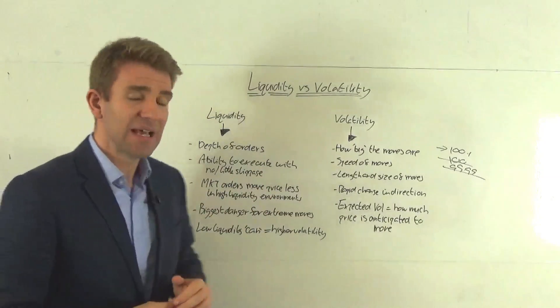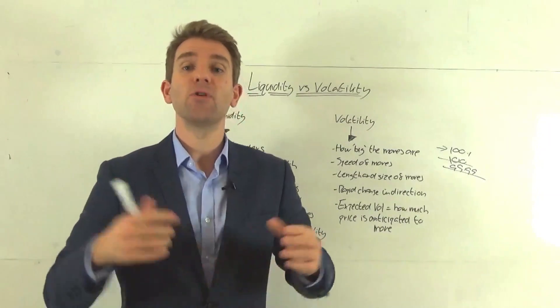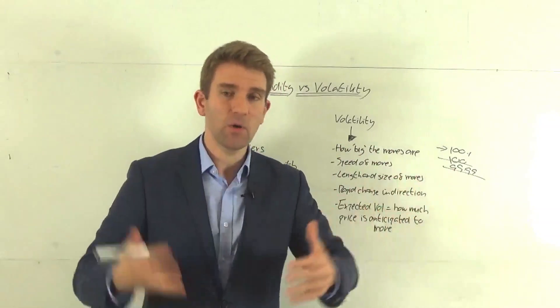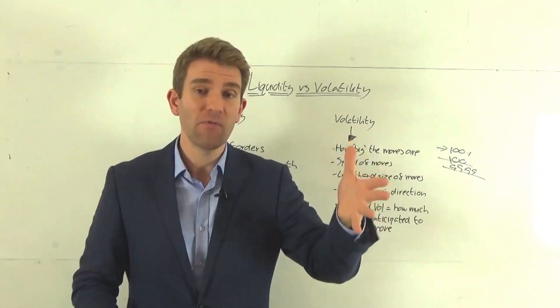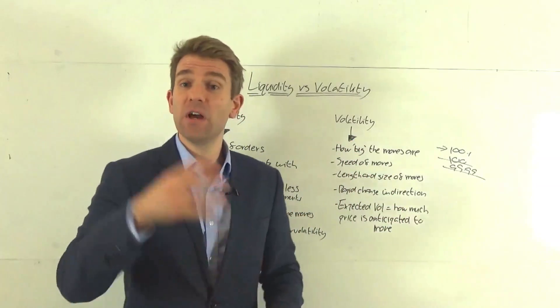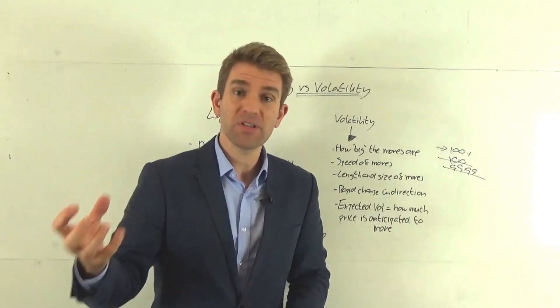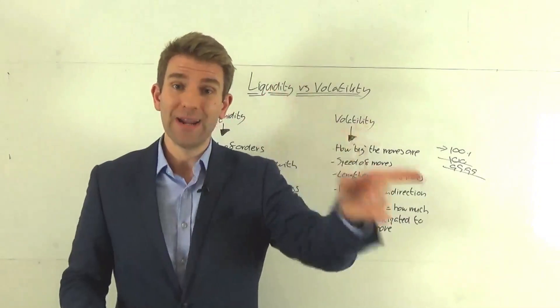market orders move price less, means that if you're coming with a market order, you've got no regard for price. The difference between the market order and limit order is market order, you don't care about price, you just want in now, you're very very time sensitive, you're not price sensitive. Limit order is you're very very price sensitive, but you're not time sensitive. So market order, want in now,